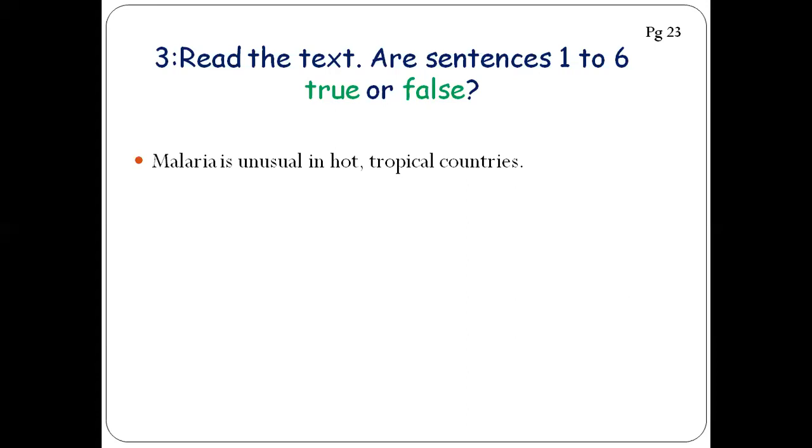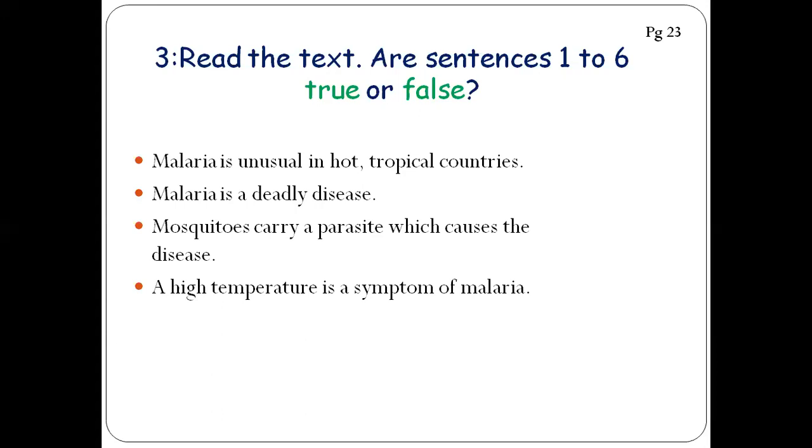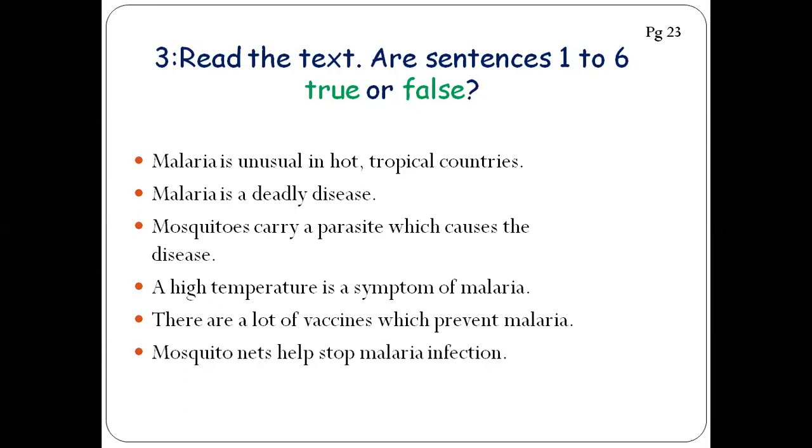Please, the first statement: Malaria is unusual in hot tropical countries. You heard the information from me, so just tell me, is it right or wrong? True or false? Keep your answer with you or write in the chat box. Number two: Malaria is a deadly disease. Number three: Mosquitoes carry a parasite which causes the disease. Number four: A high temperature is a symptom of malaria. There are a lot of vaccines which ruin malaria. Mosquito nets help stop malaria infection. So tell me, which statement is true or which statement is false?